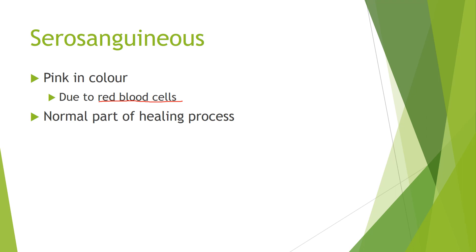You can remember what serosanguinous is by just looking at the word. If you combine serous fluid, which is white, with a little bit of sanguinous fluid, which is red, you're going to have a fluid that's pink in color.